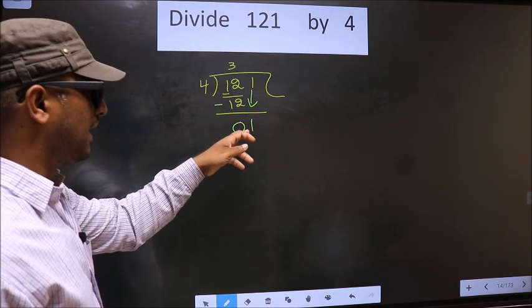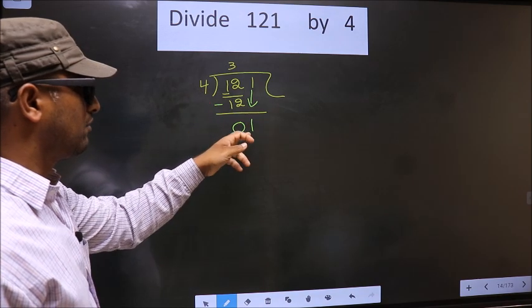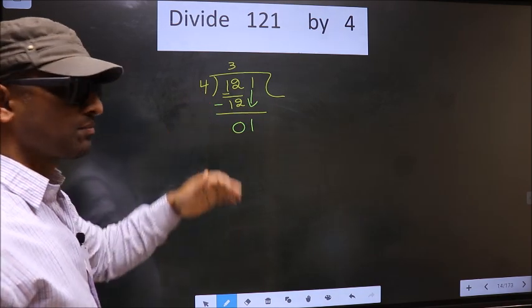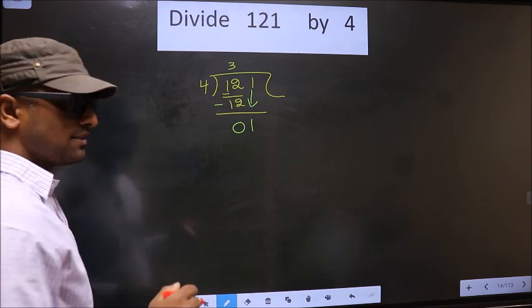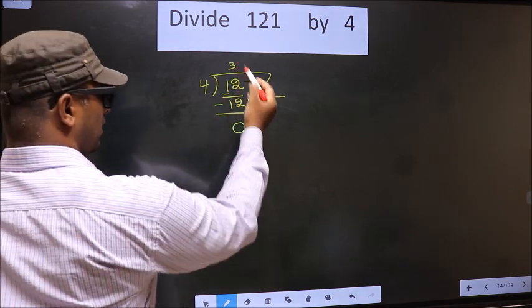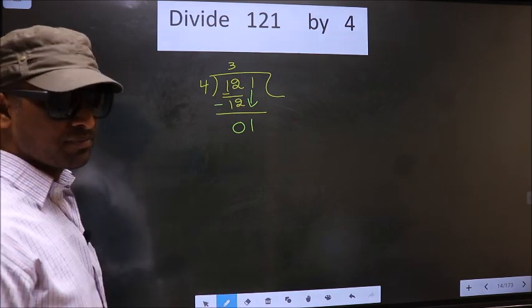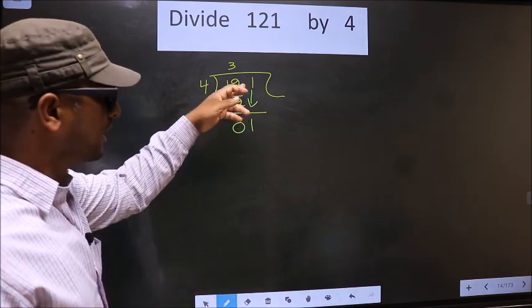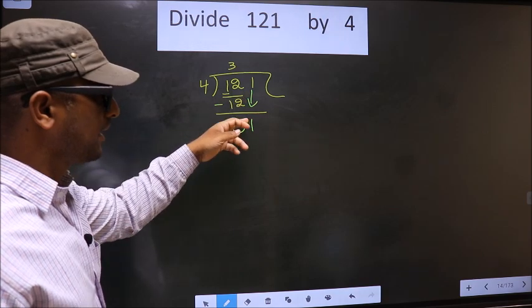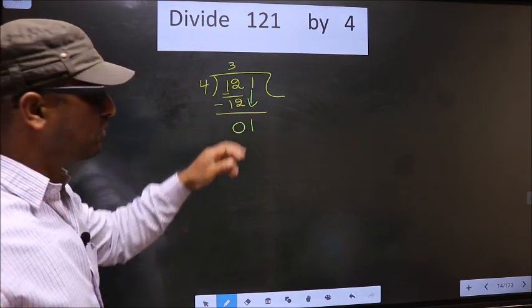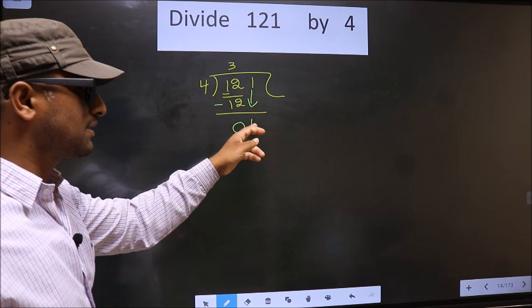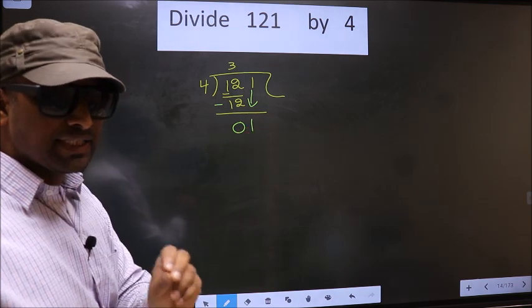Here we have 1 and here 4. 1 is smaller than 4. So what many do is they put a dot and take 0 here, which is wrong. Just now you brought the number down. And in the same step, you want to put a dot and take 0 here, which is wrong.